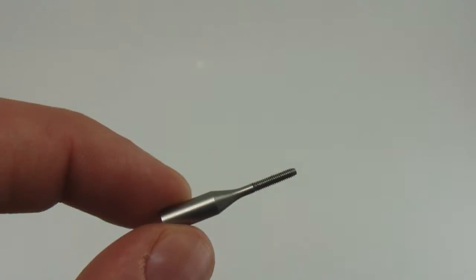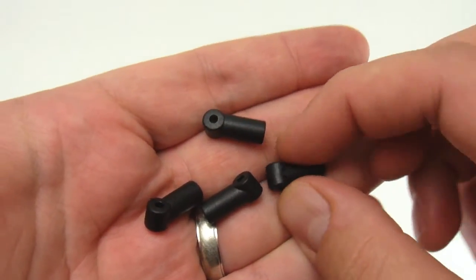Rod ends for your tail control rod and boom supports make for a quick and easy install.